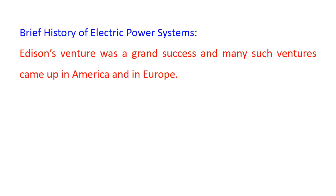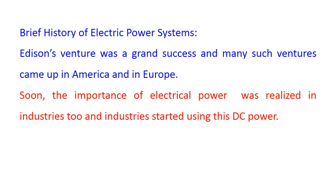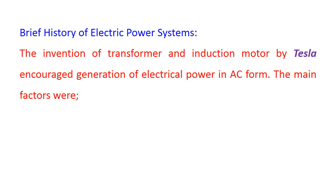Edison's venture was a grand success and many such ventures came up in America and in Europe. Soon the importance of electrical power was realized in industries also, and industries started using DC power. At the same time, Tesla was working on alternating currents. The invention of the transformer and induction motor by Tesla encouraged generation of electrical power in AC form.